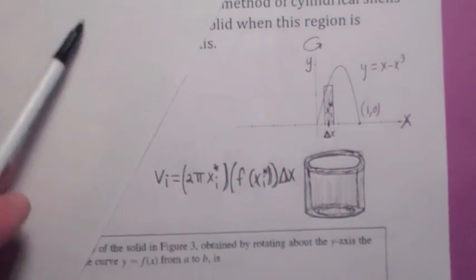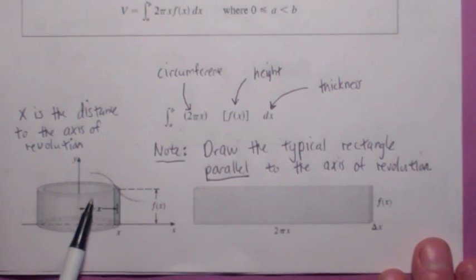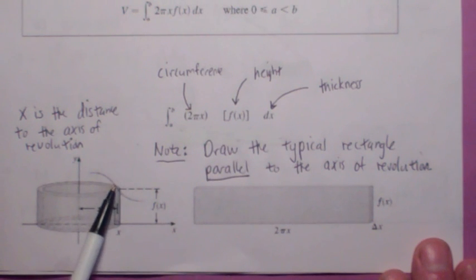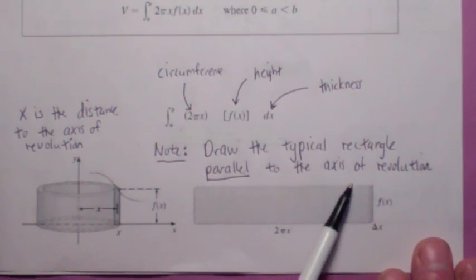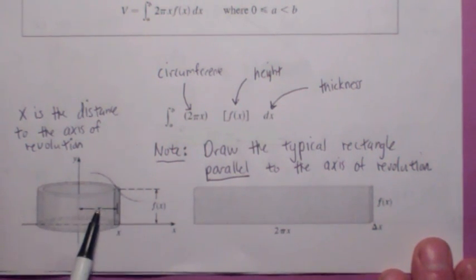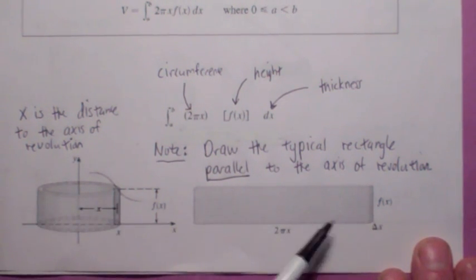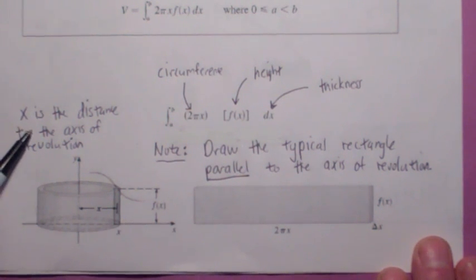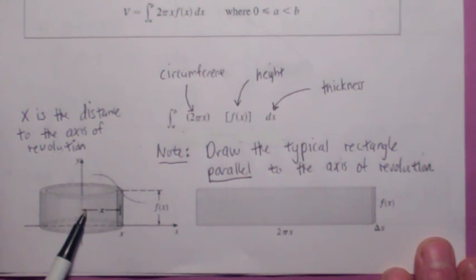Why is that? If you think about it, if you were to take this shell and cut it open, it would be a rectangular solid. The length of the rectangle would be the circumference, where x is the distance from the y-axis out to here — we're calling it x sub i star. The width of the rectangle would be f of x, and the thickness would be Δx. Think of x not always as the x-coordinate, but as the distance from the rectangle to the axis of revolution.